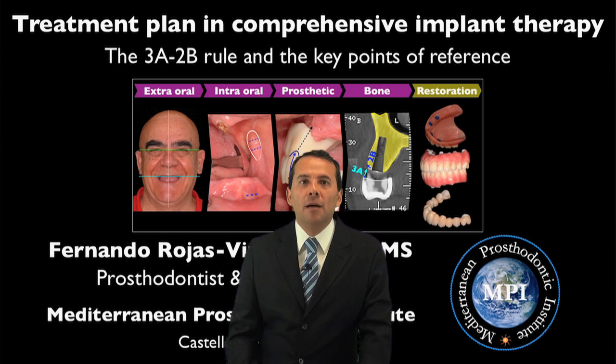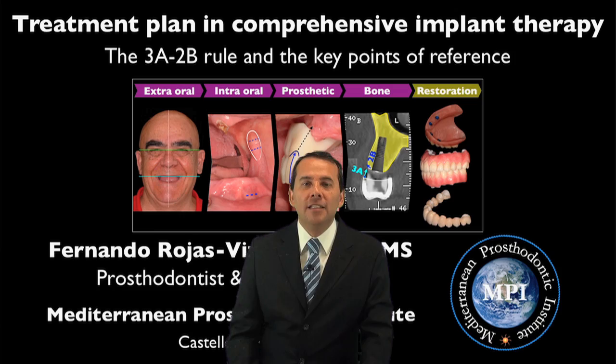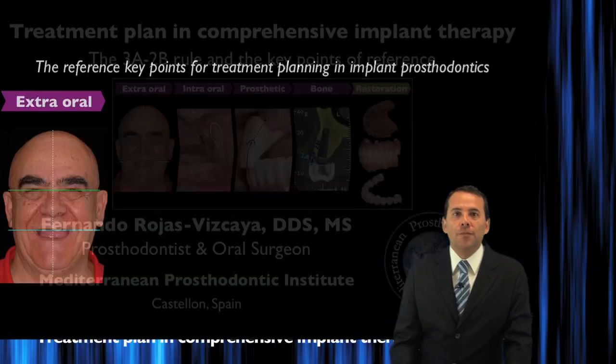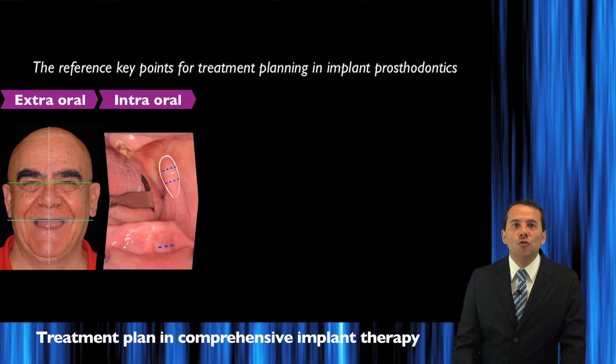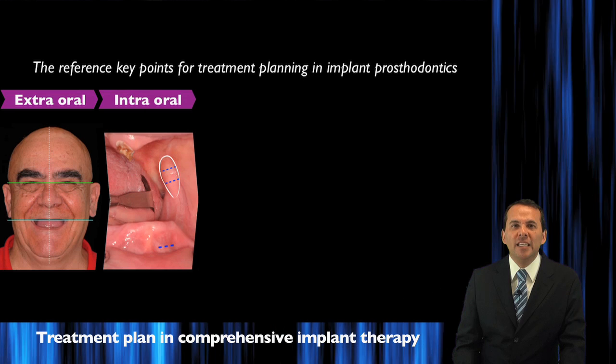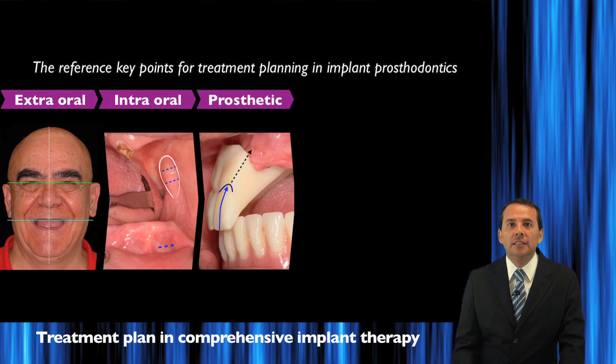In this presentation about treatment planning in complex cases, I want to present a specific tool that you can use as reference to plan your case, to plan your implant, and to make your restoration. That is the 3A-2B rule. You will see how we can plan our cases using extra-oral information, some intra-oral information, and how if you mix this information, you can determine the 3D position of the new teeth for your patient.